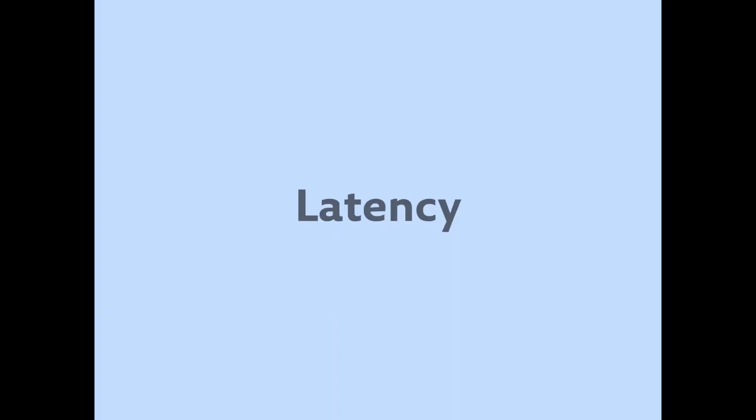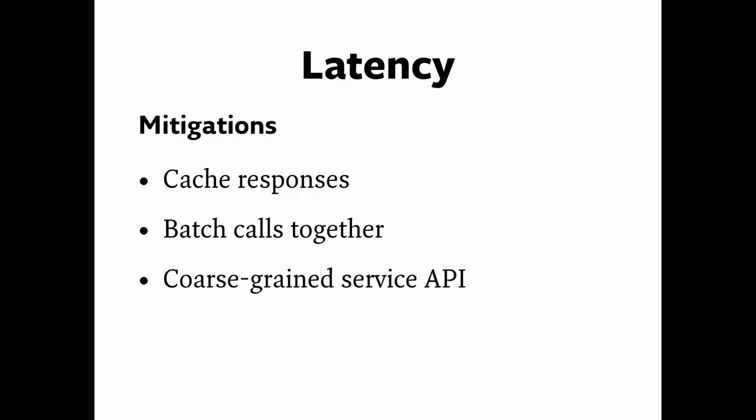Before we talk about underestimated costs, I want to talk about what costs I feel are well understood in the industry. First, latency. Function call overhead in a monolith is almost nothing — maybe even literally nothing due to compiler inlining. But the network round trip introduced with a microservice call could be a millisecond, could be tens or hundreds of milliseconds, depending on the network and service capabilities. We can mitigate that by caching responses locally, batching calls — sending 100 IDs in one call versus 100 separate calls — or keeping services fairly coarse and wide so that not many calls are necessary.